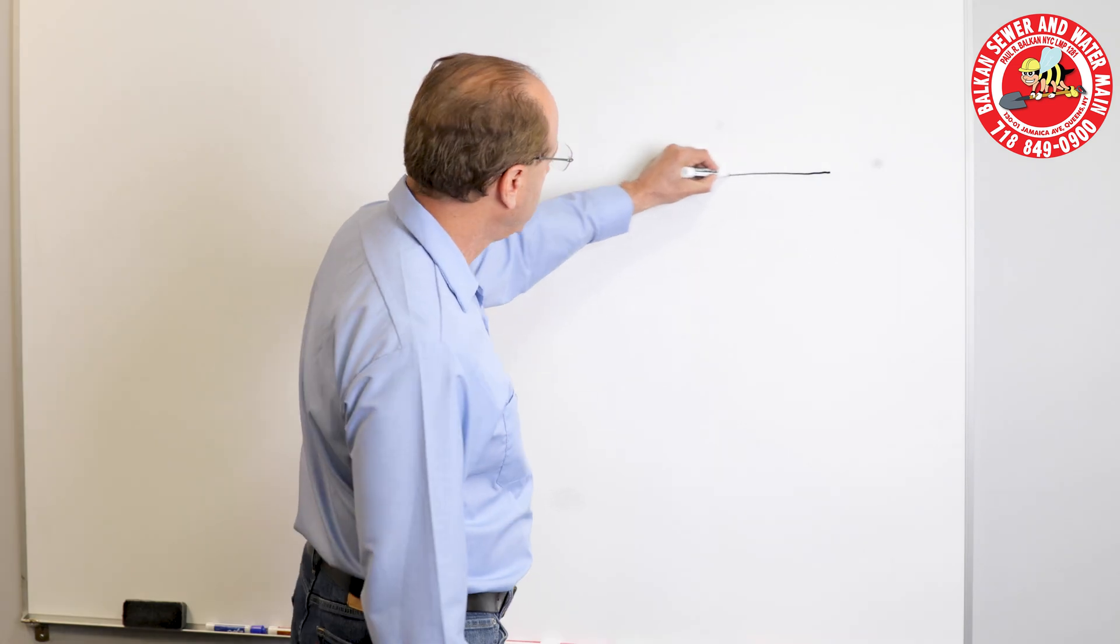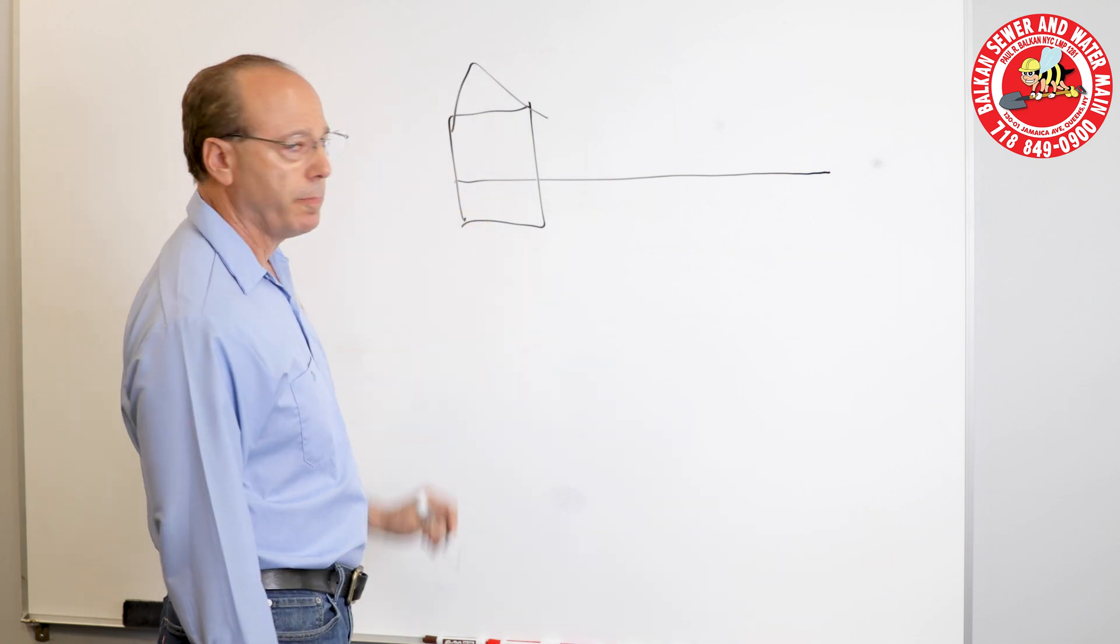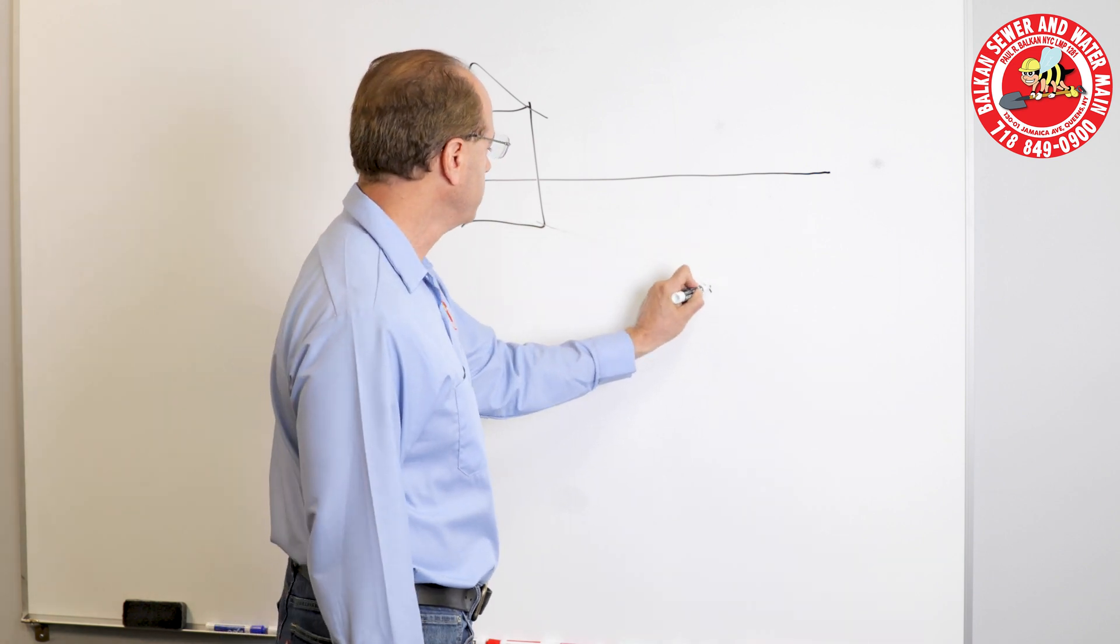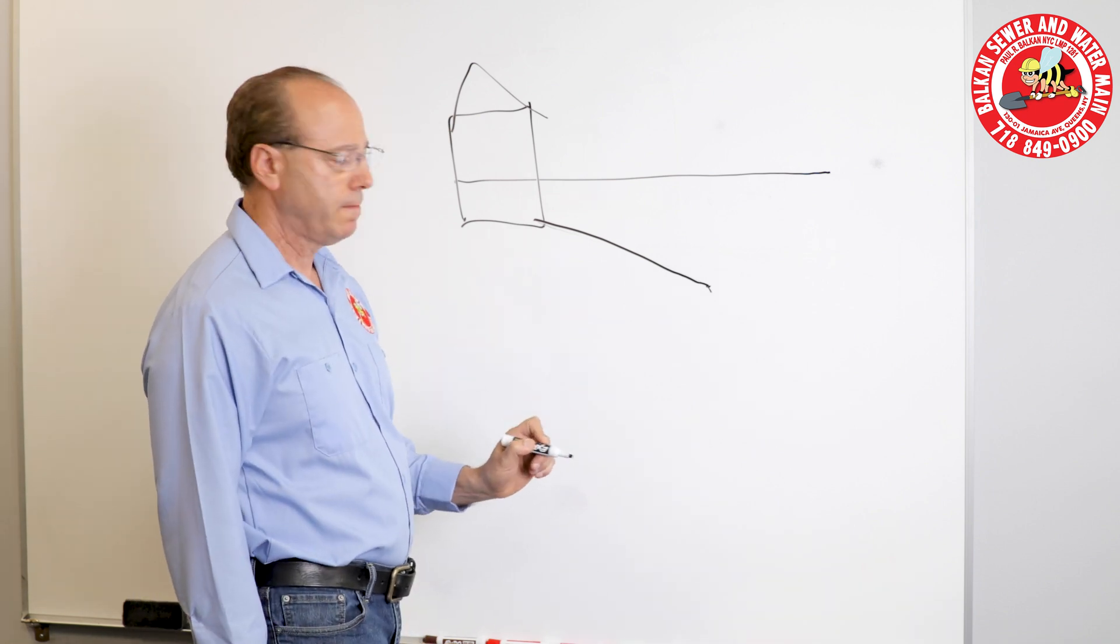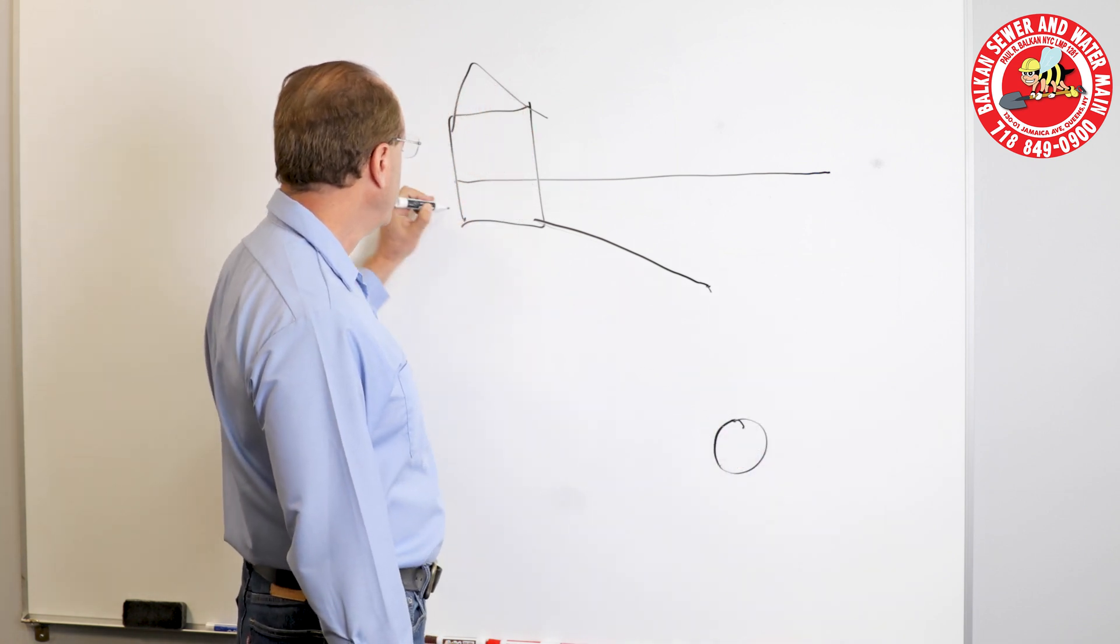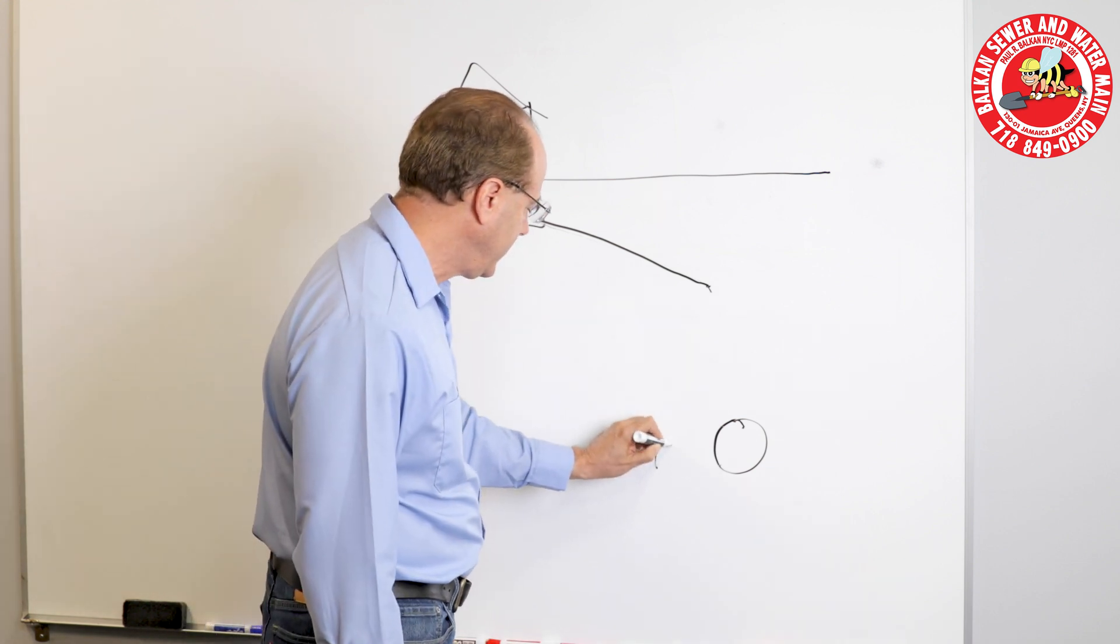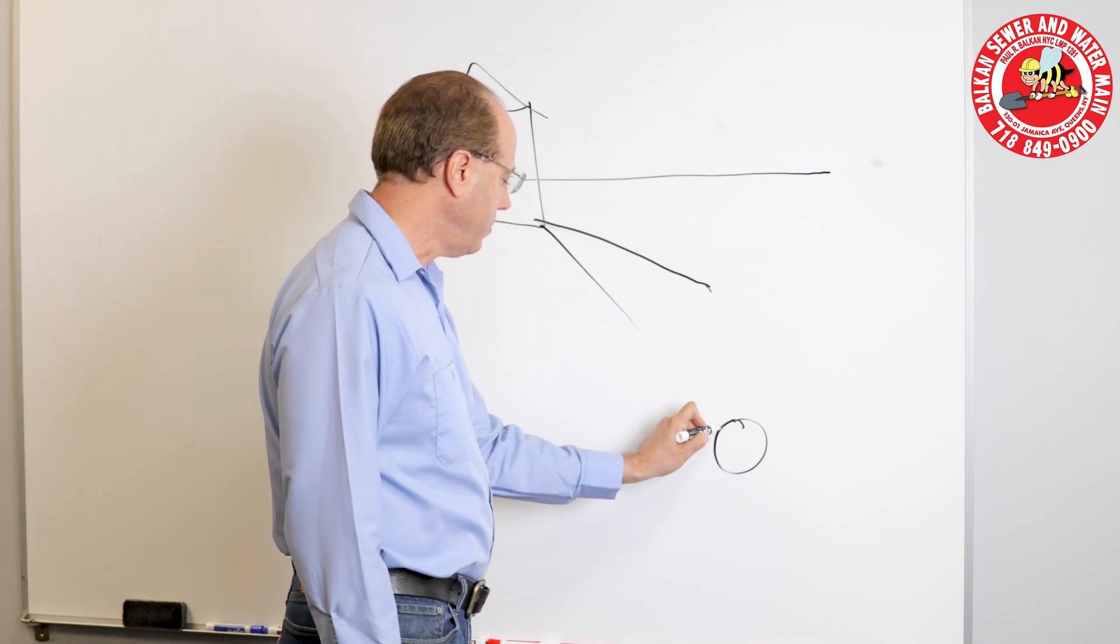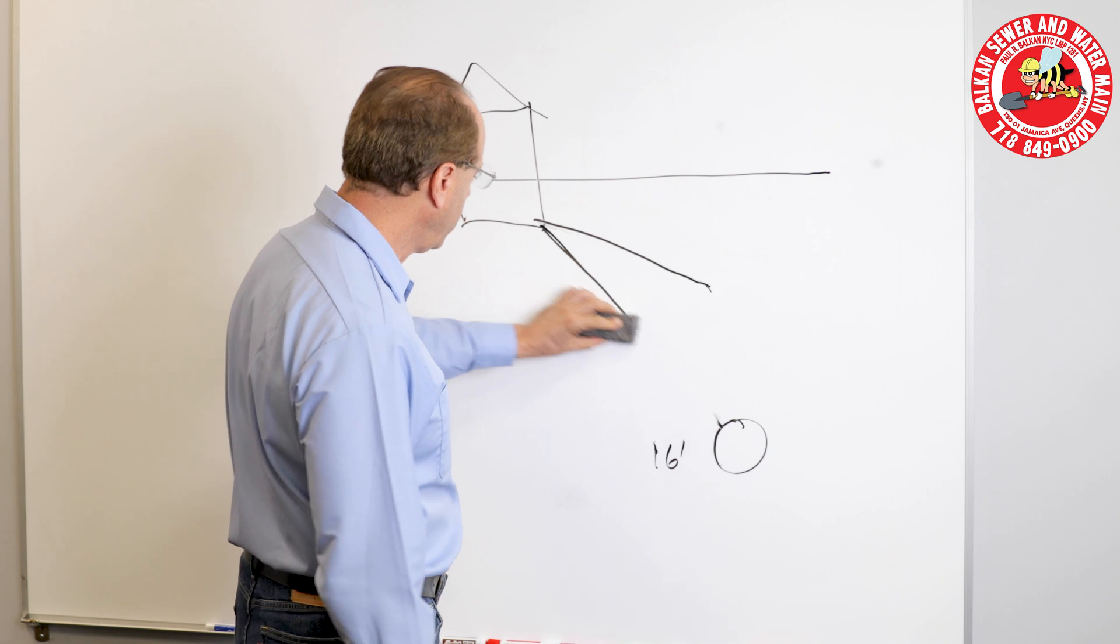So first of all, if this is ground level and this is your home, this is your basement, a sewer is allowed to be built with a certain degree of pitch, usually one to two to one to four in pitch. However, if the sewer in the street is extremely deep, say you are about seven feet deep here, but the sewer itself is 16 feet deep, you are not allowed to build your sewer connection with that much pitch. It goes against code and it goes against good plumbing practices.